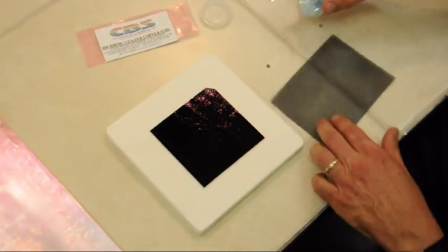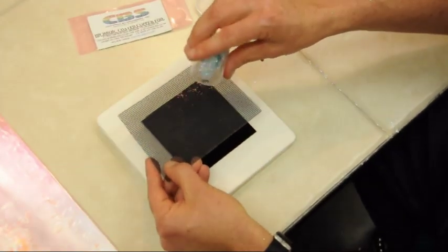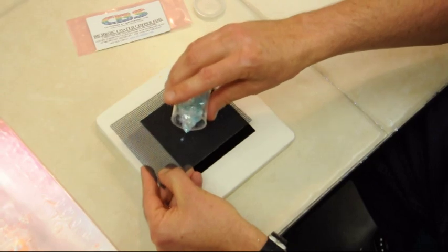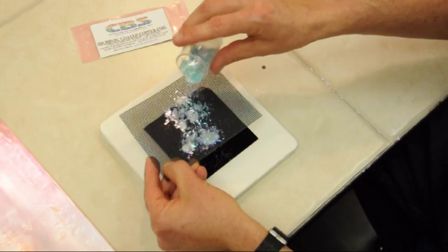So next we're going to take another piece of black base glass and a piece of drywall sandpaper. It makes a real good screen for pushing the dichroic through since it's got a rough texture to it.